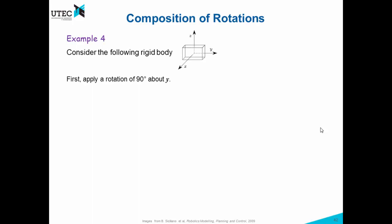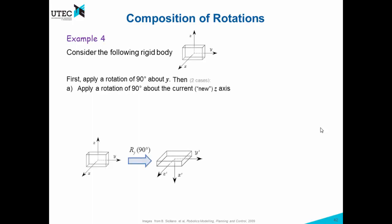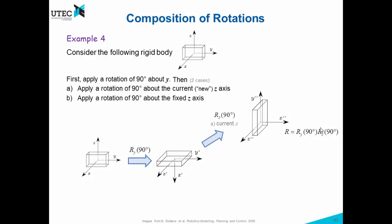This fourth example reinforces the same idea. We apply a rotation of 90 about y and get frame 1. Then we apply a rotation of 90 about the current or new z axis and obtain another frame — this is a post-multiplication because it is with respect to the current frame. In the second case we apply a rotation of 90 about the fixed z axis and end up in a different configuration, requiring a pre-multiplication because it is with respect to the fixed axis.